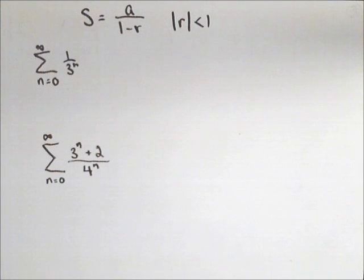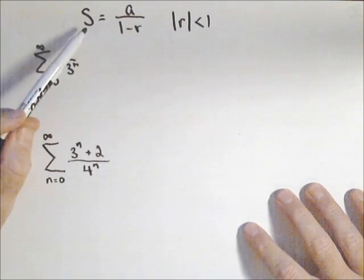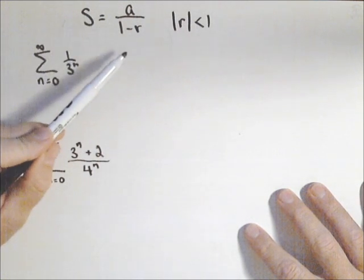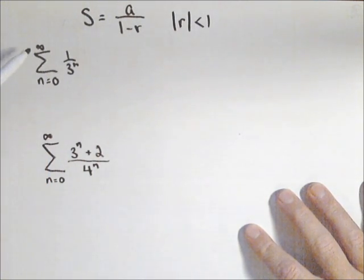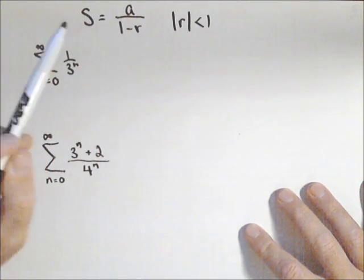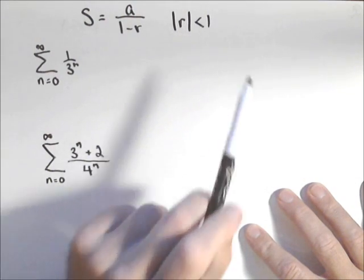In this video we're going to look at calculating a couple more geometric series using the formula S equals A over 1 minus R. So I should note that these are infinite geometric series. All we need is that common ratio to be less than 1.